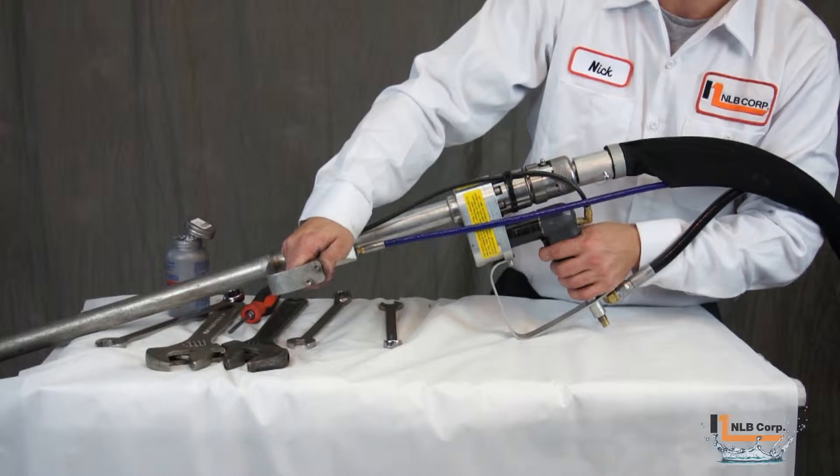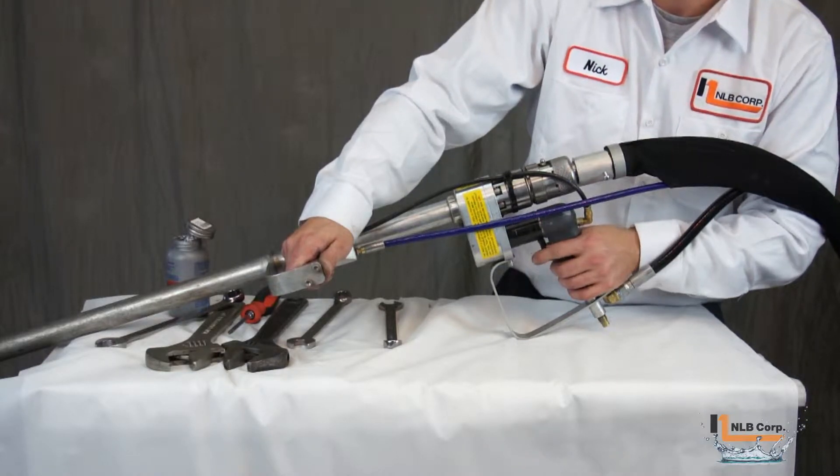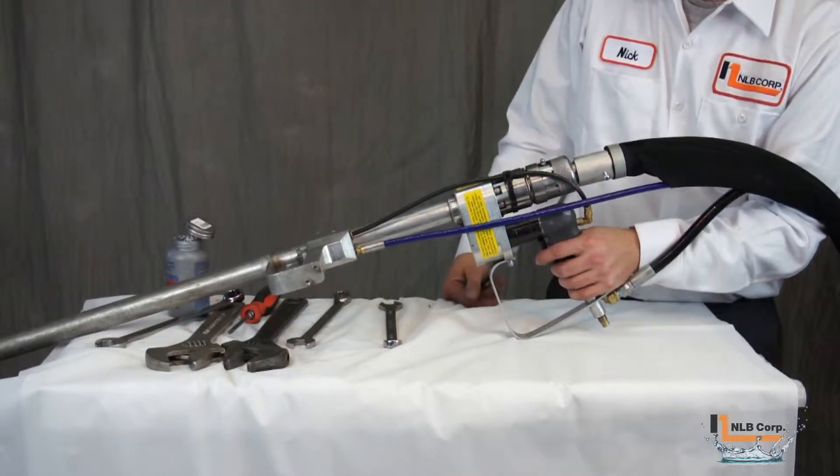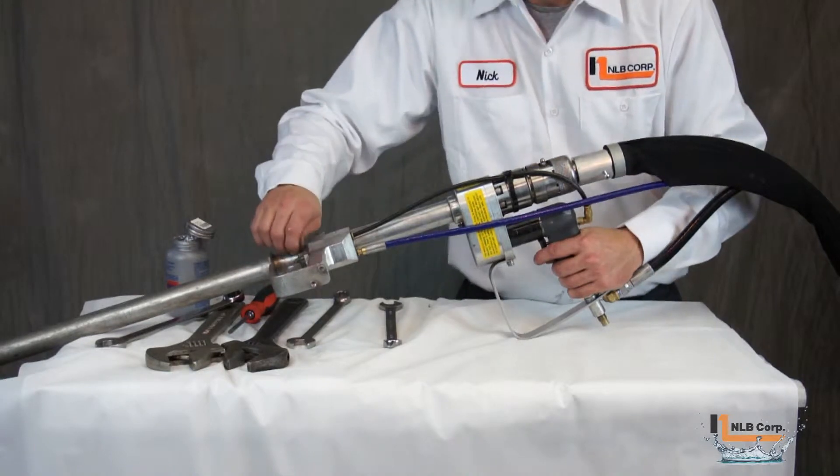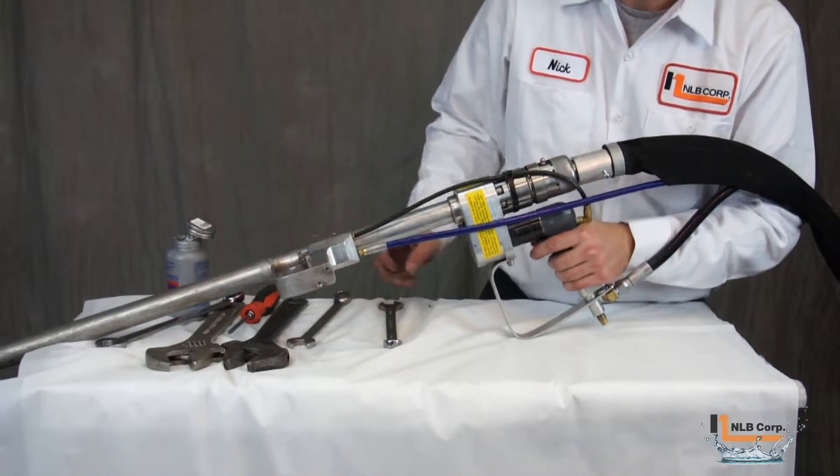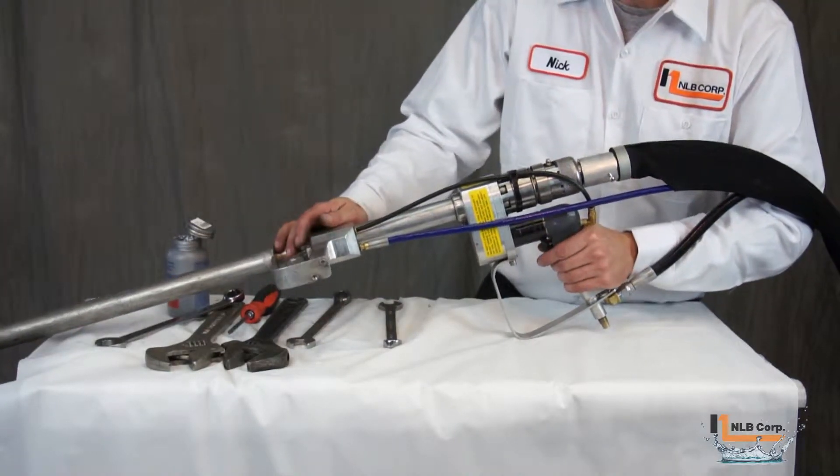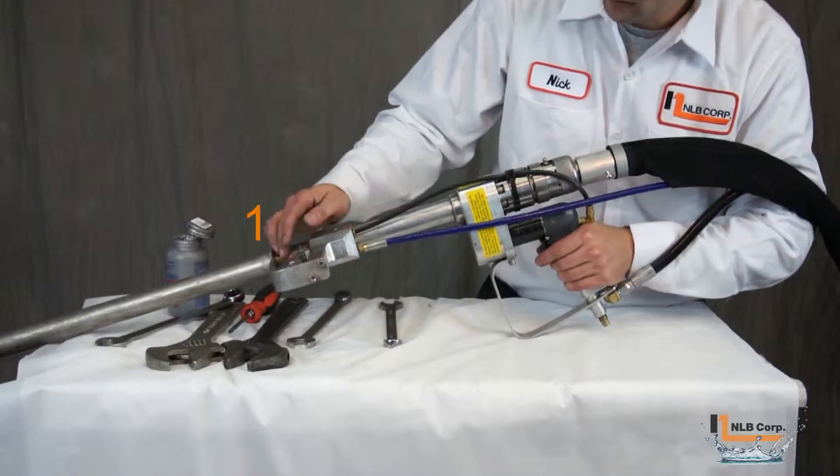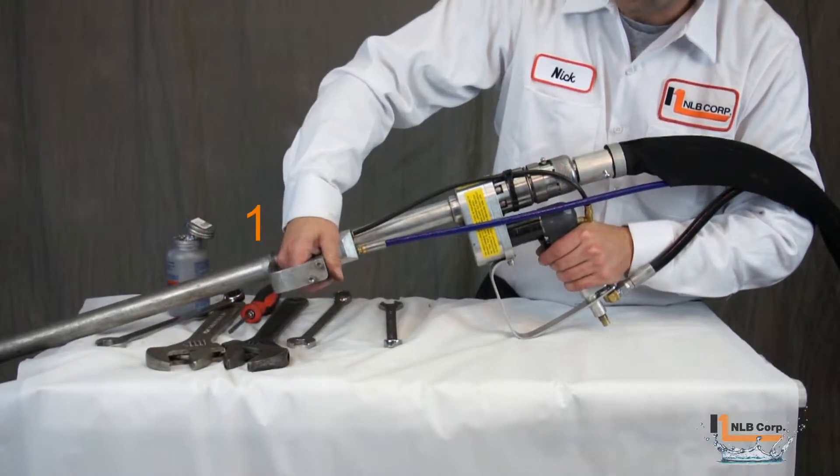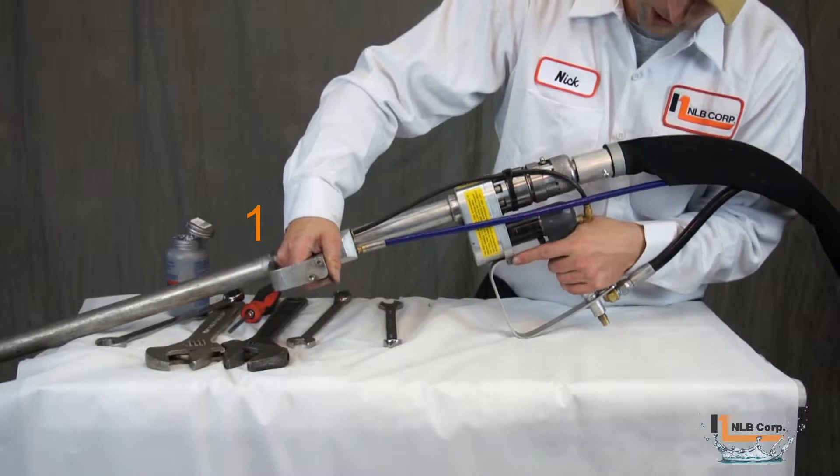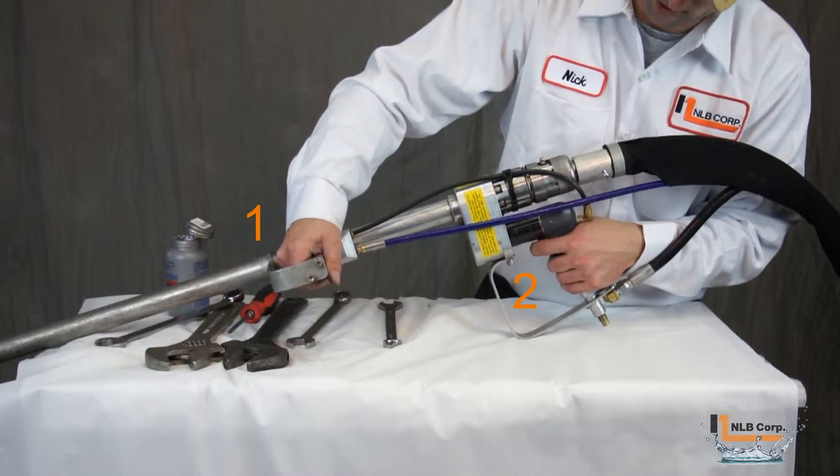While the previous sequence correctly shows the path of the air through the system, it does not depict the correct sequence for starting or stopping the system. Because rotating the lance without water present in the system can lead to premature seal failure, it's important to first actuate the front trigger and then the rear trigger when starting the blasting process.